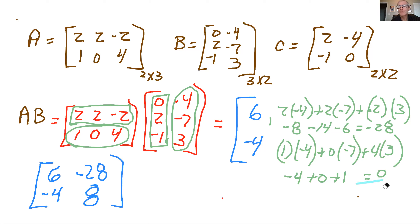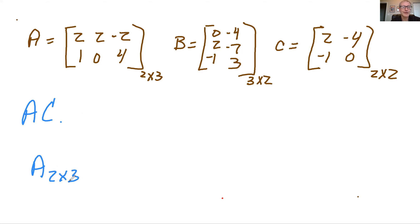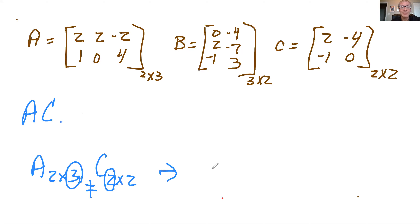Let's do a couple more examples. Let's take A times C and see if we can do that. First thing you need to do is check — so we look at the order of A times the order of C. This row and this column must be equal, and the answer is no. So this cannot be done — no solution, you wouldn't be able to multiply it. That check is always needed.